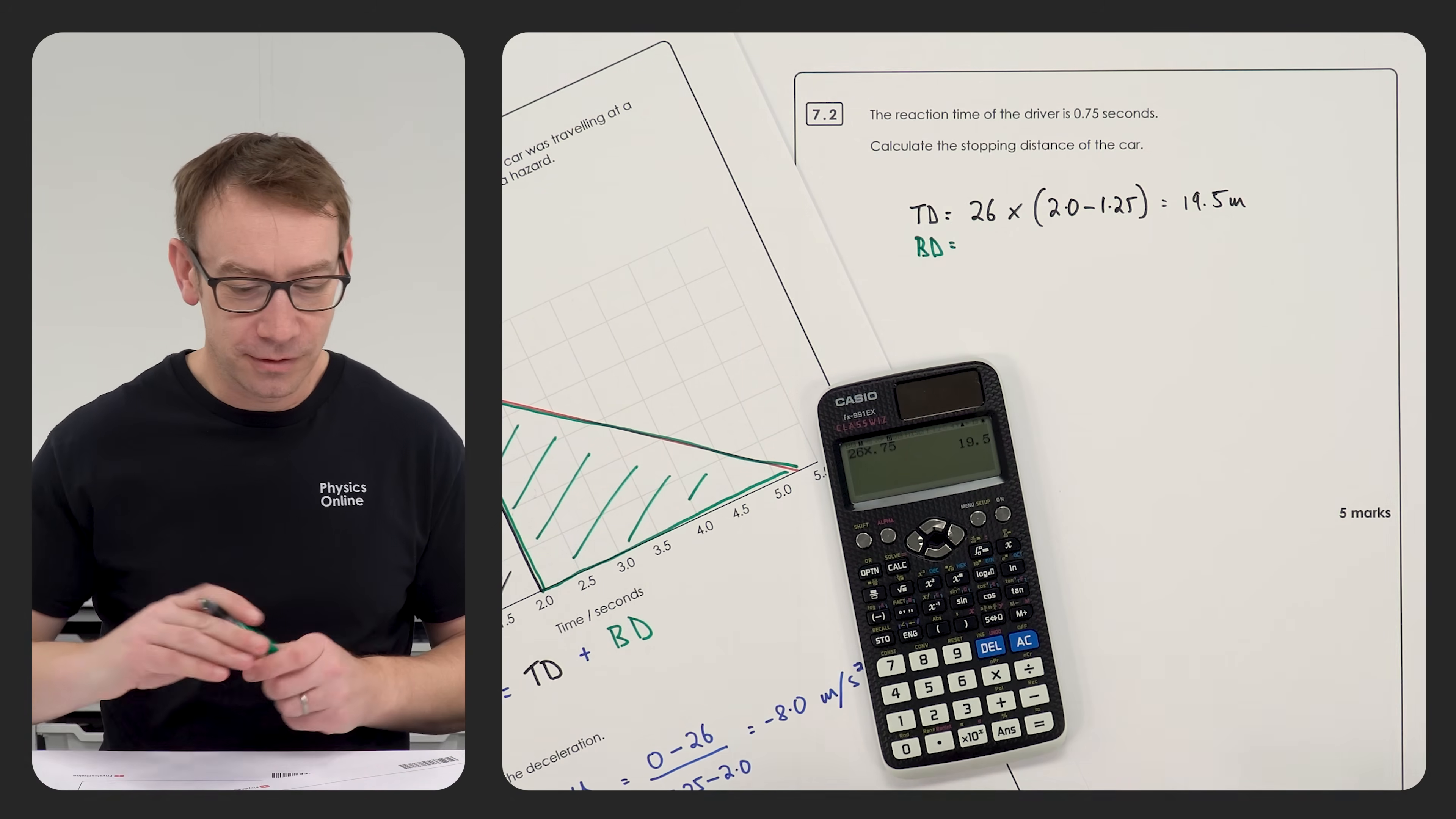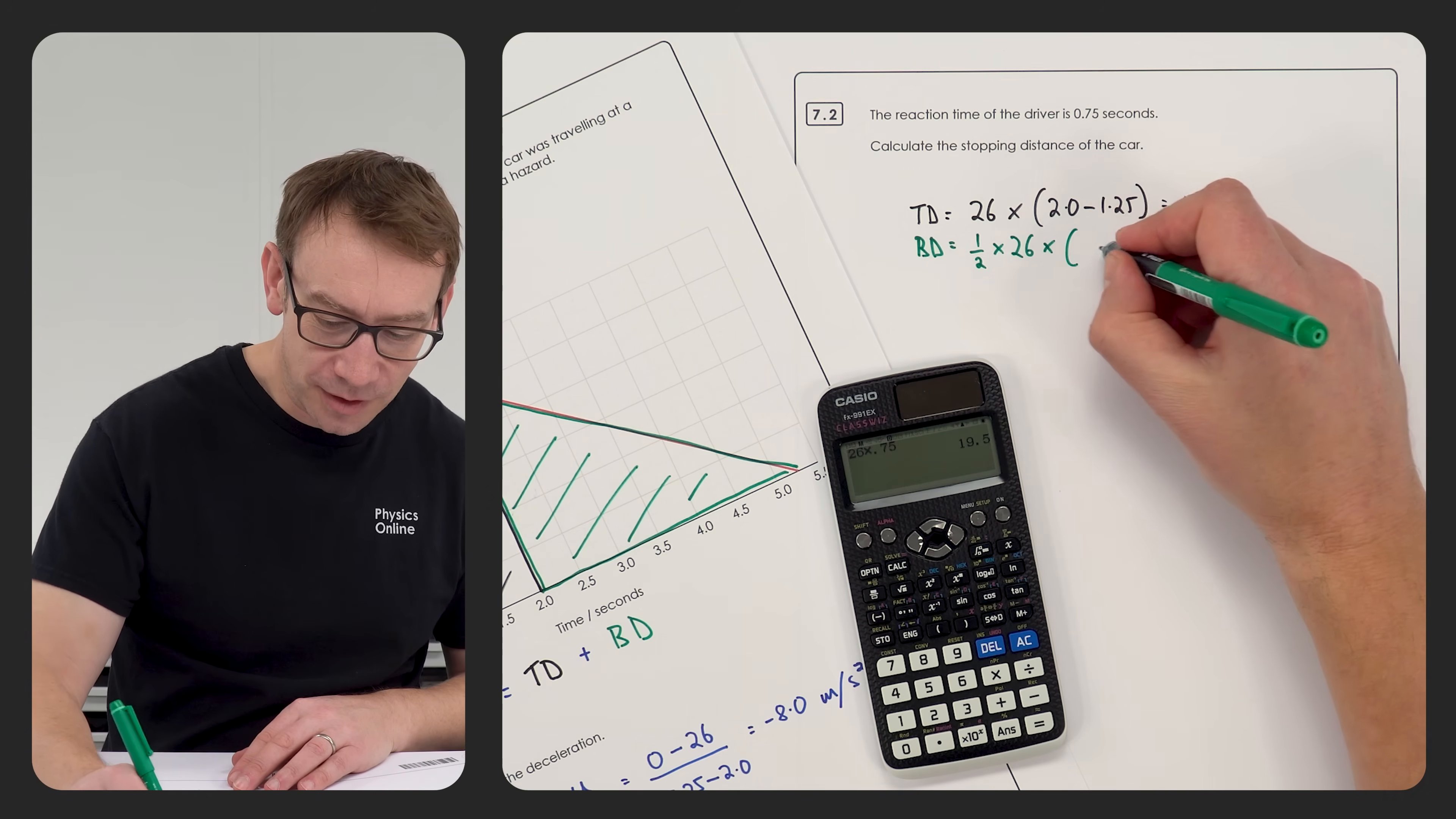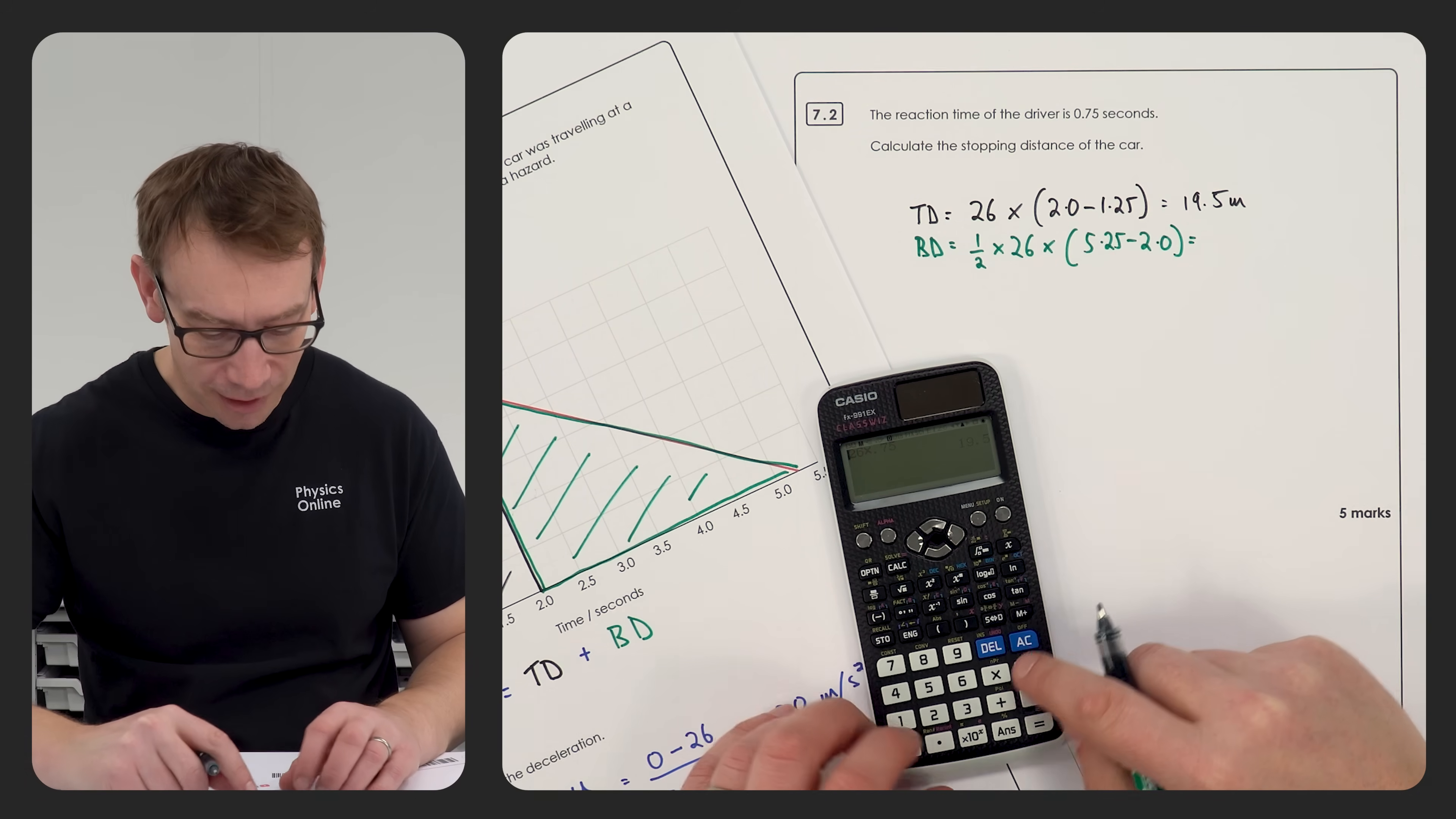So that's going to be a half times, in this case the height is 26, and the base is going to be equal to 5.25 minus 2.0. Again put the numbers into your calculator, and this is equal to 42.25 meters.